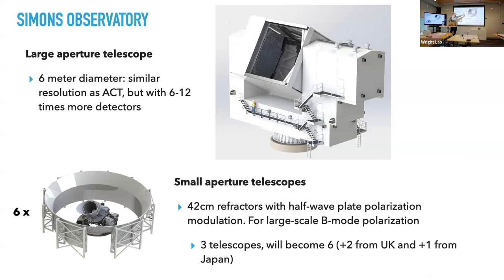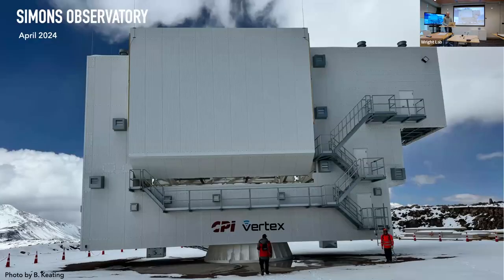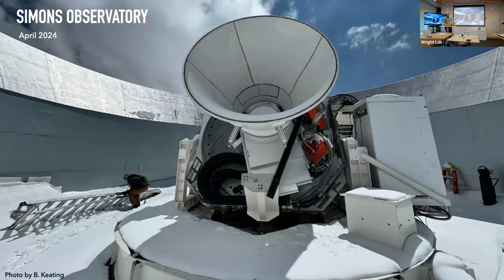It's exciting times for Simons Observatory — it's all coming together now. As of August, the large telescope structure is in place, and at that time the detectors and focal plane were essentially in place as well. We were then waiting on the mirrors. A few days ago the housing became more complete, but the mirrors are still not there, so that's what we're waiting for. The smaller telescopes, by the way, are already collecting data, which is very exciting.